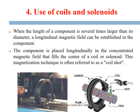The use of coils and solenoids becomes relevant when the length of the component is very large — several times larger than its diameter — and a longitudinal magnetic field needs to be applied. The component is placed longitudinally in the concentrated magnetic lines that fill the center of the coil or solenoid. This type of magnetization technique is also called the coil shot method. Current is passed through the coil, generating a magnetic field that is externally imposed over the specimen.